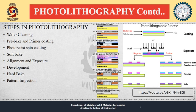The basic steps in photolithography are: wafer cleaning, pre-bake and primer coating, photoresist spin coating, soft bake, alignment and exposure, development, hard bake, and pattern inspection.